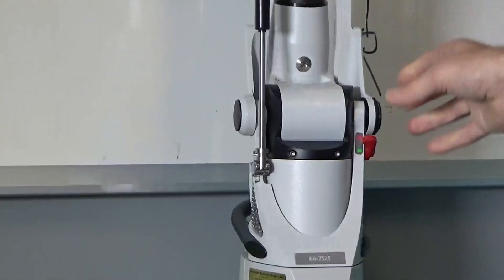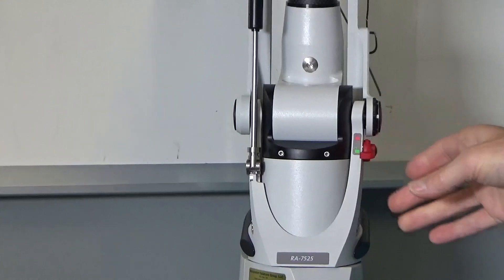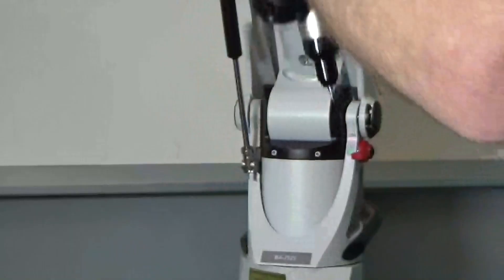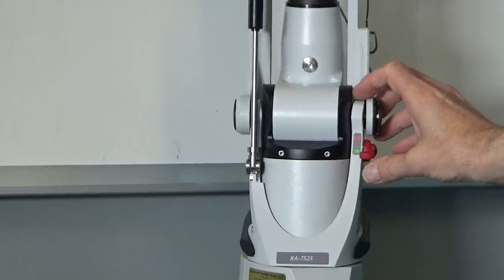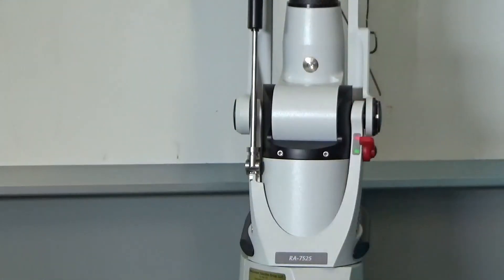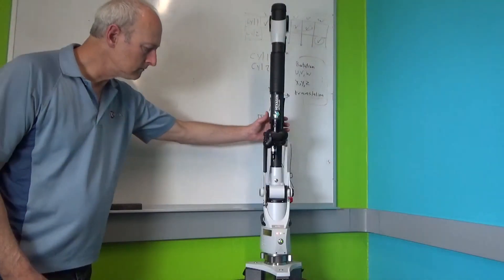Just above that we have this lock mechanism here. It's to keep the Roamer arm from falling down or being knocked and having it fall and possibly damage the tip. It should always be locked when you have it just sitting.